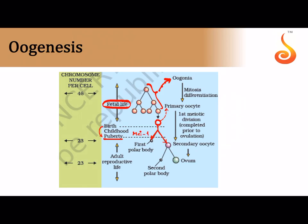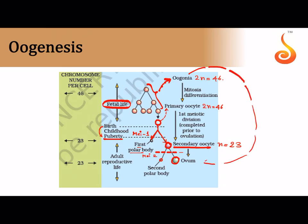At puberty, the primary oocytes undergo meiosis I — the first reductional division — to form a larger daughter cell called the secondary oocyte and a tiny cell called the first polar body, which dies out. Since this is a product of meiosis I, it has n = 23. The secondary oocyte then undergoes meiosis II to form a single ovum and a smaller second polar body. The ratio in oogenesis is 1:1 — from one oogonium you get one ovum.